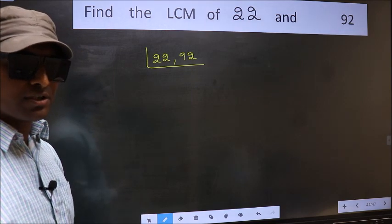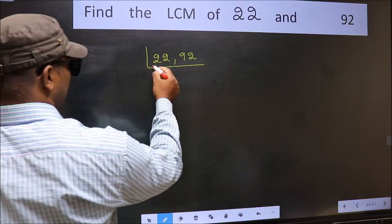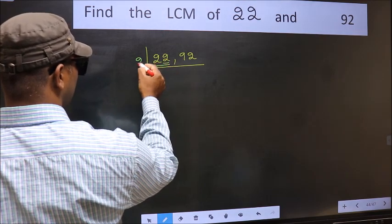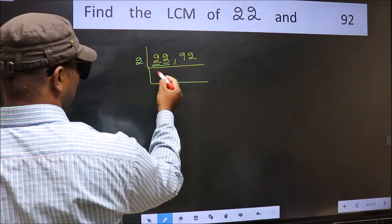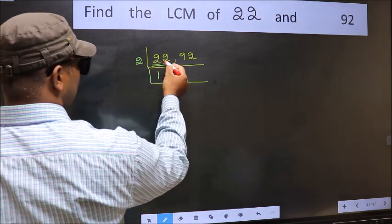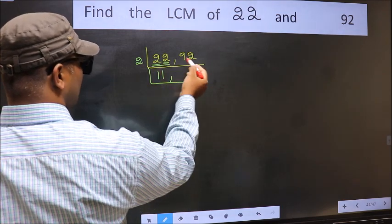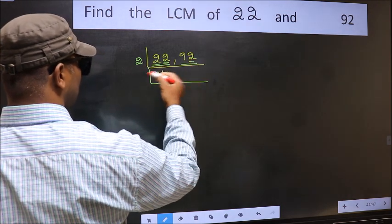Now focus on the first number, which is 22. For this number, last digit is even, so take 2. First digit 2, when do we get 2 in the 2 table? 2 once is 2. The other digit 2, 2 once is 2. The other number 92, last digit is even, so this is divisible by 2.